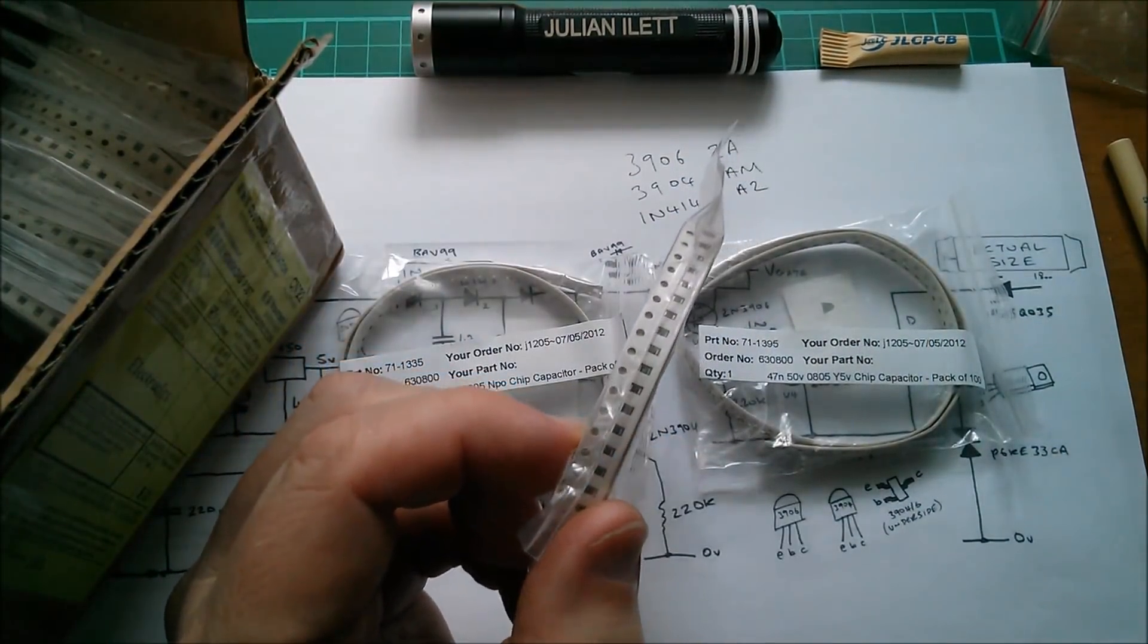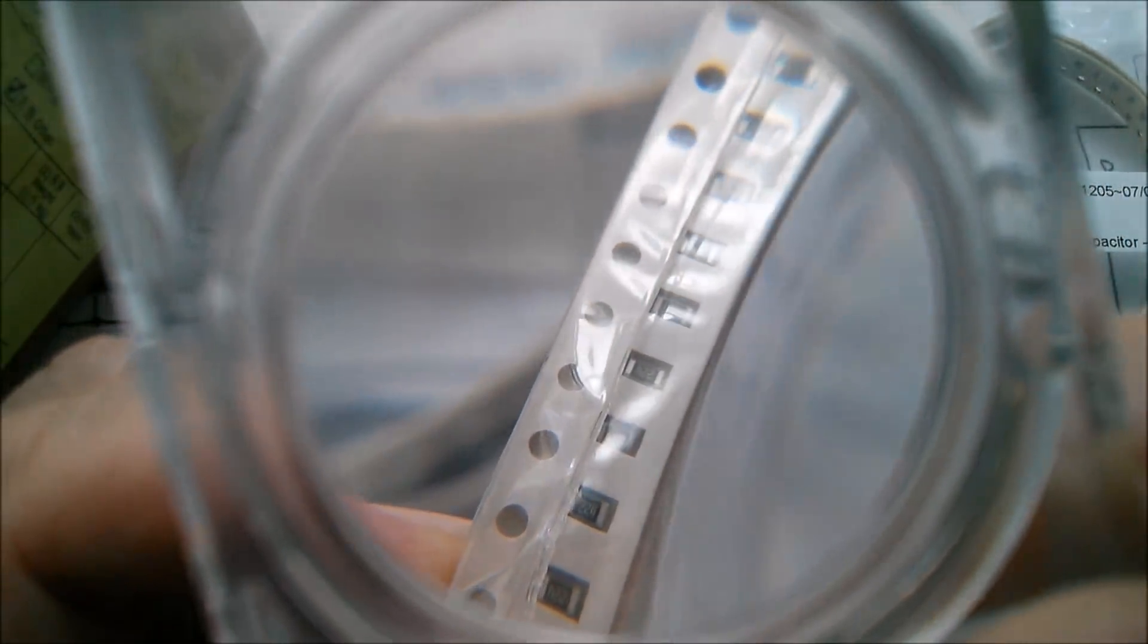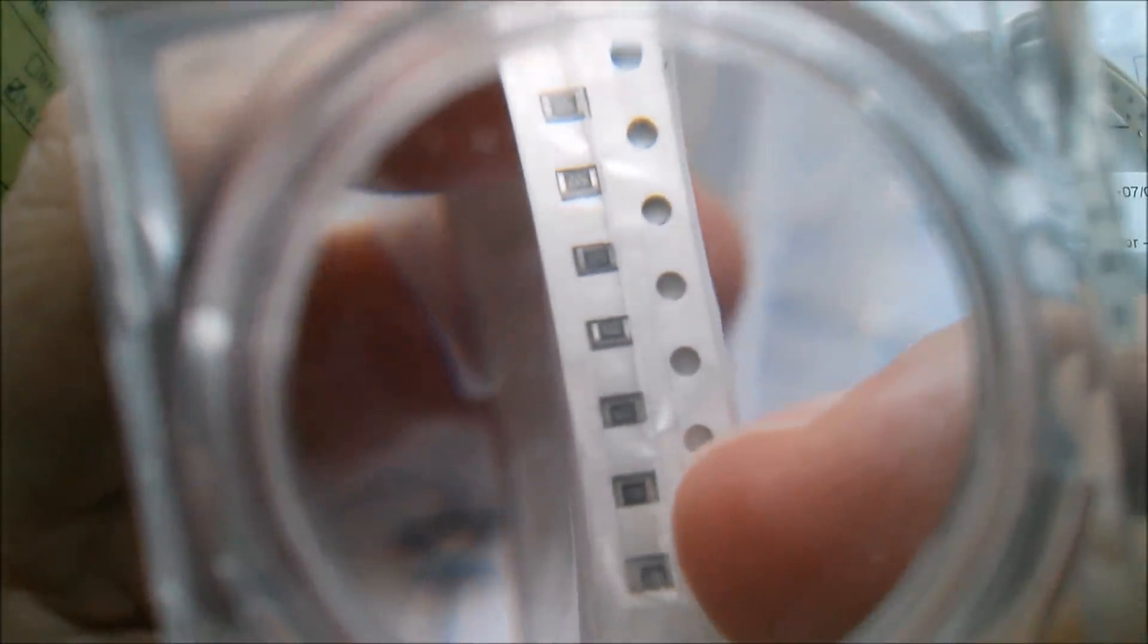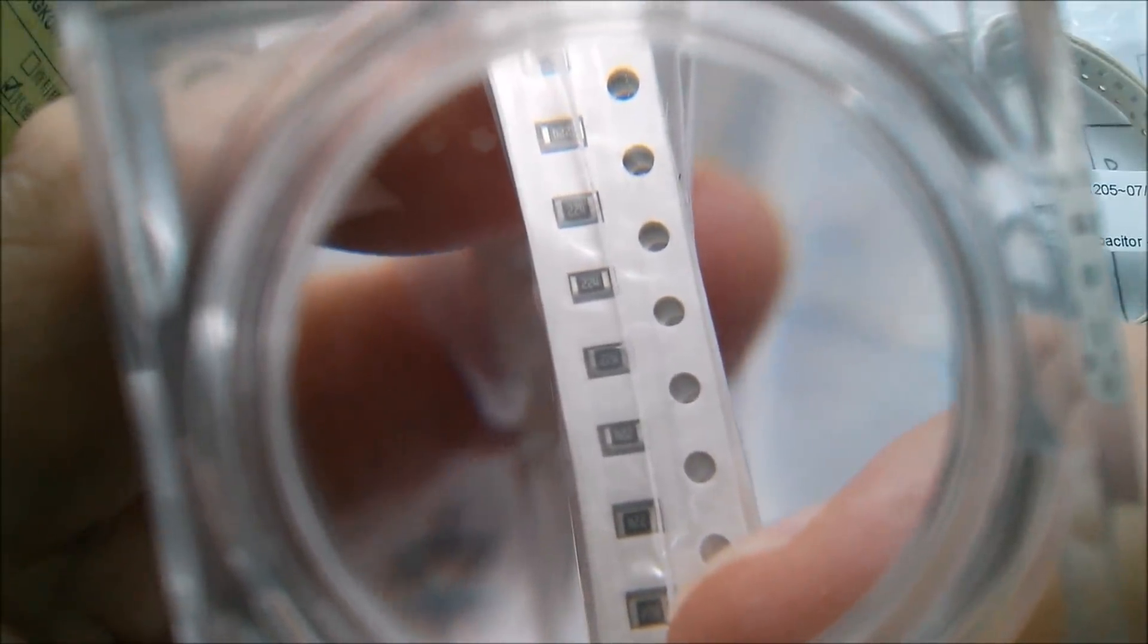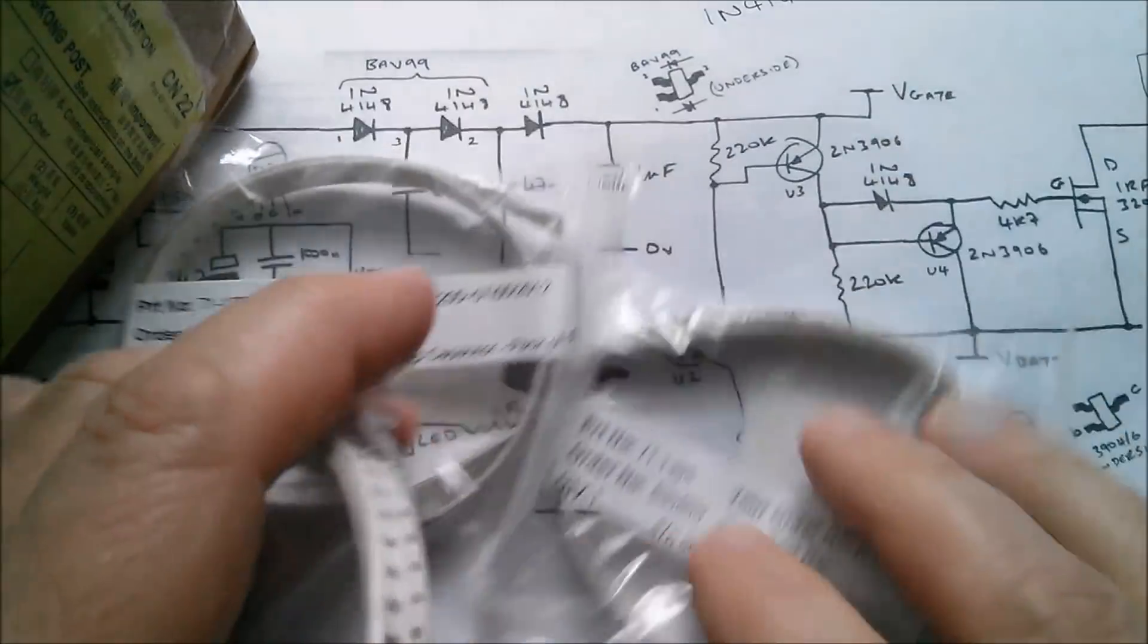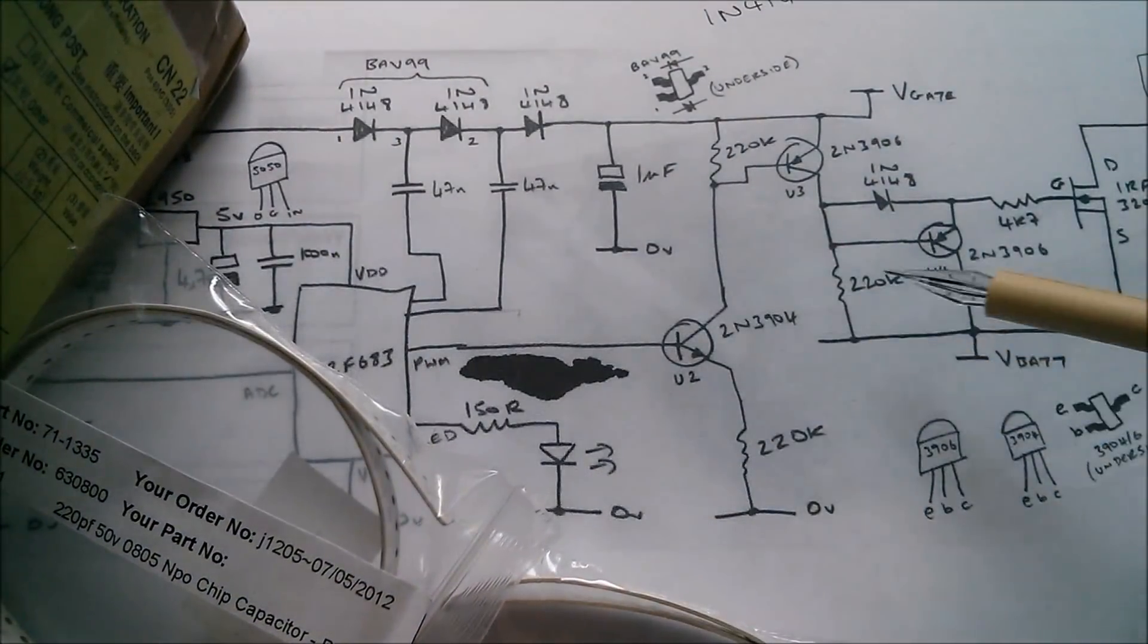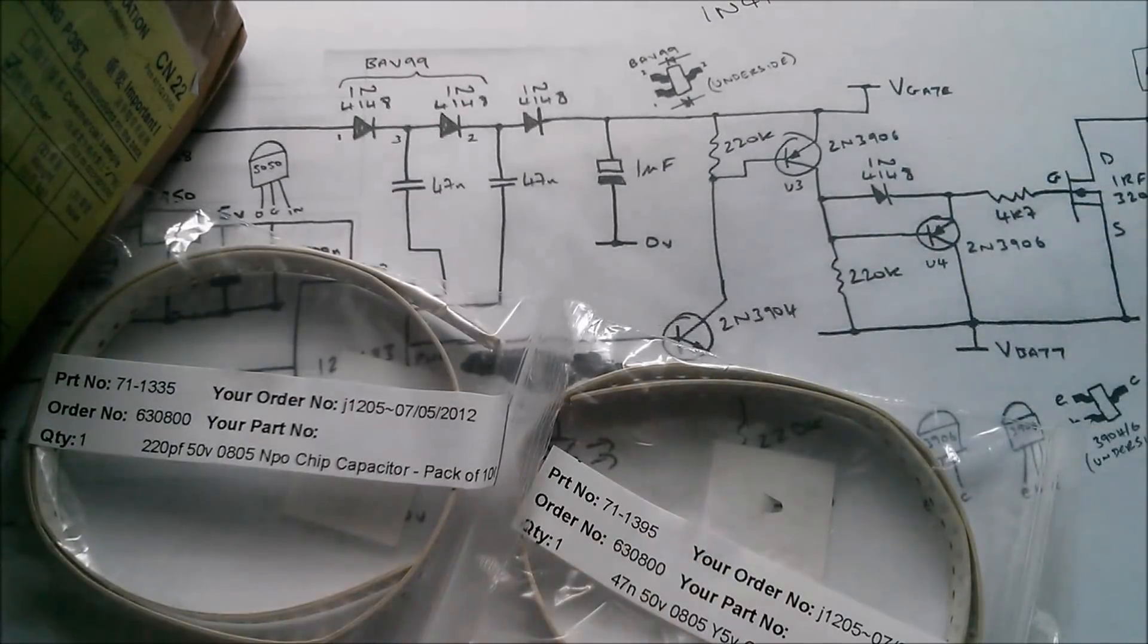And I've got some 0805 resistors here, let's take a look at, see if we can actually read the marking on there. Yeah, I think it's this way up, oh well some of them will be one way around and some will be the other way around won't they? Yeah, I think you can just about see there 224, so that's 220k. There are several of those on this circuit, those three there in the high side driver.